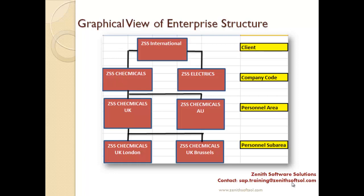So that was the enterprise structure — it is very simple. Enterprise structure is made of client, company code, personal area, and personal sub-area. One important thing: the personal area is assigned to only one company code. For example, ZSS Chemicals Australia cannot be assigned to both ZSS Chemicals and ZSS Electrics. It will only be assigned to one company code, because the company code handles profit and loss transactions, and the personal area reports those transactions to its assigned company code.